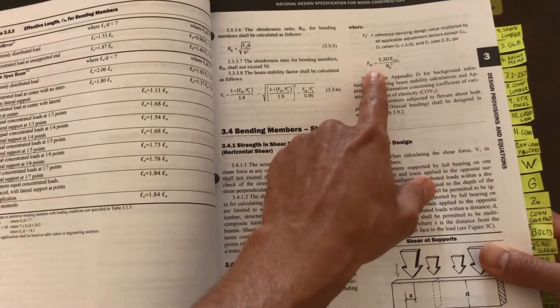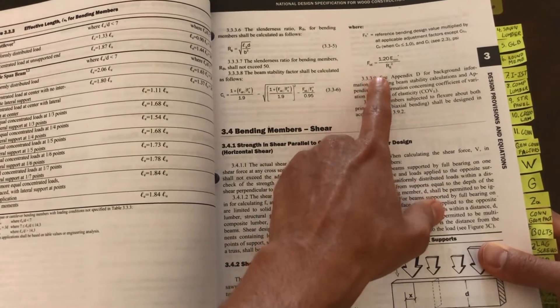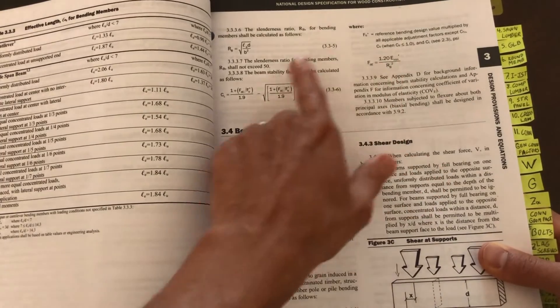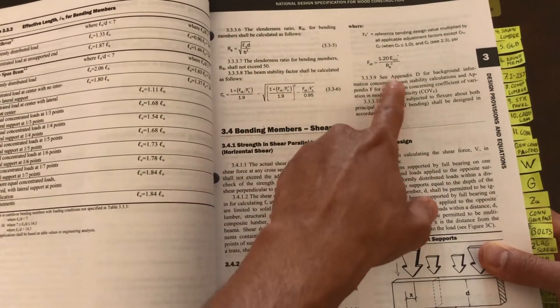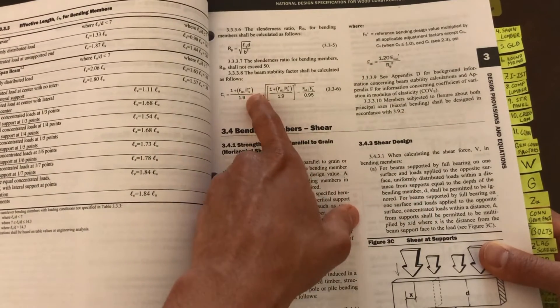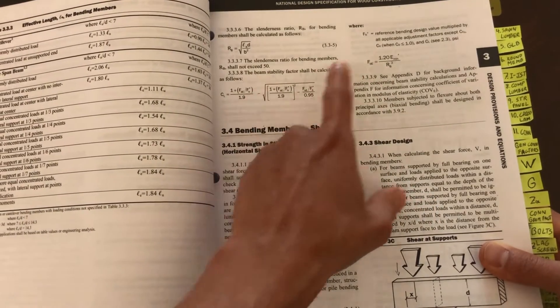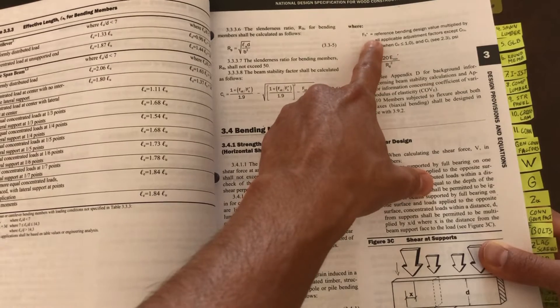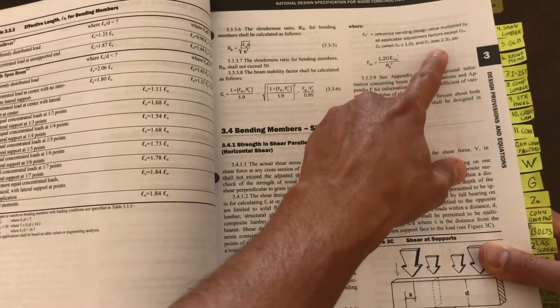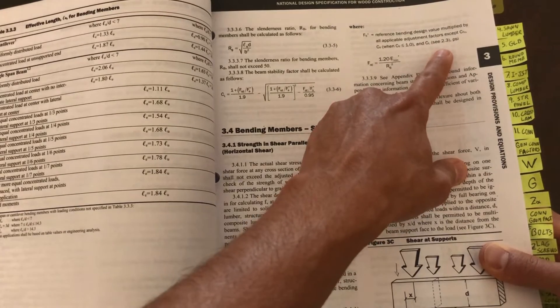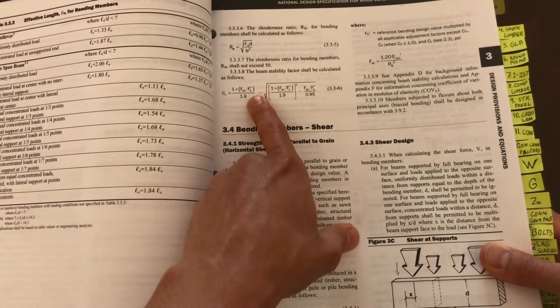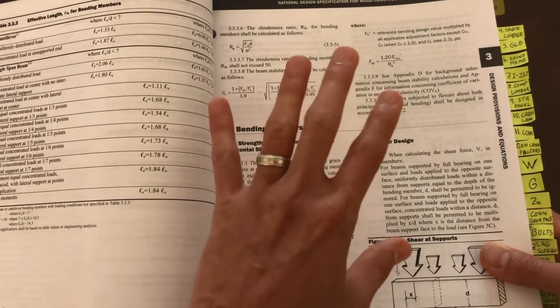After we calculate R sub B, we calculate this F sub B E, which is the elastic buckling stress. We're going to calculate this and then calculate the ratio of F sub B E over F sub B asterisk. This is F sub B prime with all the factors except C sub L. Then we plug it all in here and we finally get our C sub L and get our capacity.